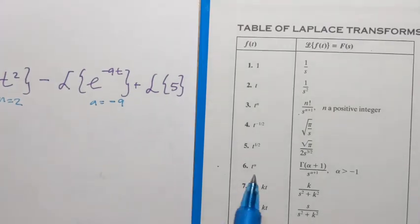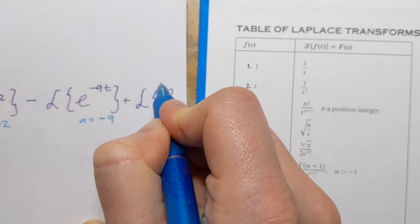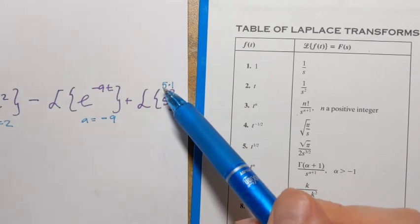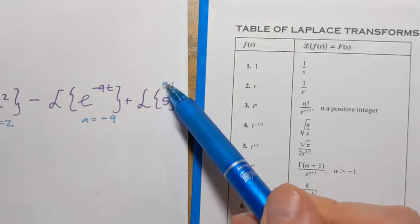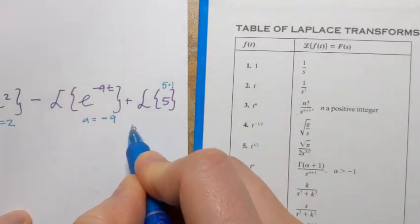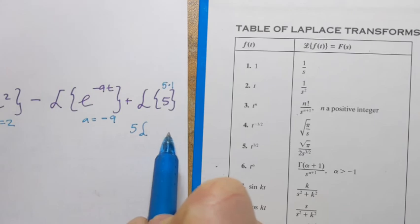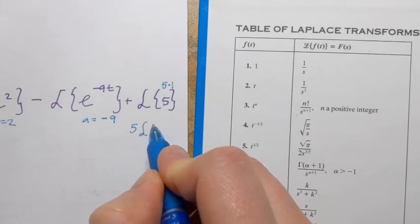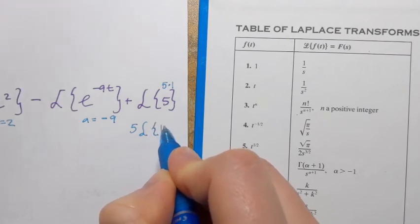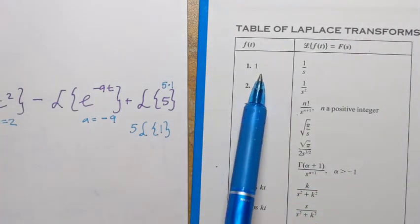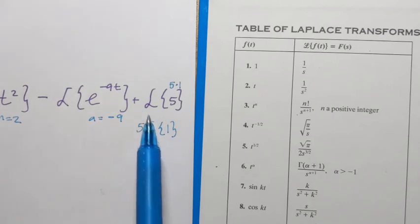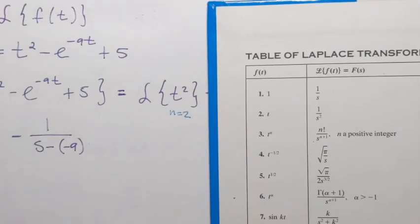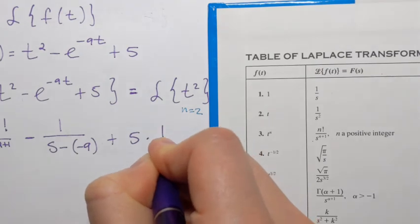But since Laplace transform is a linear operator, this is what I can do. I can think about 5 as 5 times 1. And because Laplace transform is a linear operator, it has another property, which is that the constants can be put in the front of the Laplace transform. Remember, we can always do that when we integrate or differentiate. We can always put constants in front of the integral, right? Or derivative. So that becomes 5 times Laplace transform of 1. And that I know equals 1 over s. So the result here is going to be 5 times 1 over s. So plus 5 times 1 over s.